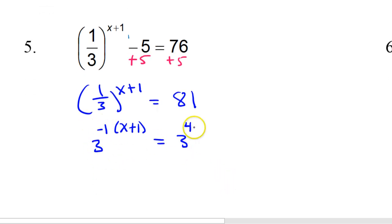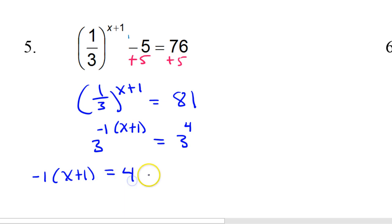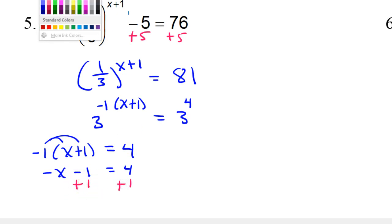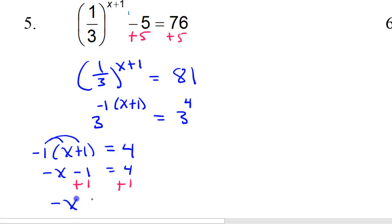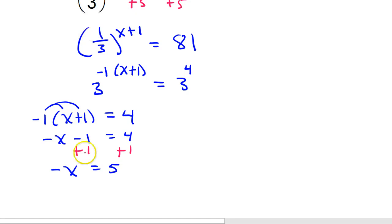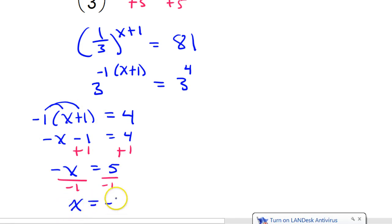If the bases are the same, the exponents must be equal. So negative 1 times x plus 1 must equal 4. Applying the distributive property: negative x minus 1 equals 4. Add 1 to both sides: negative x equals 5. Divide by negative 1: x equals negative 5.